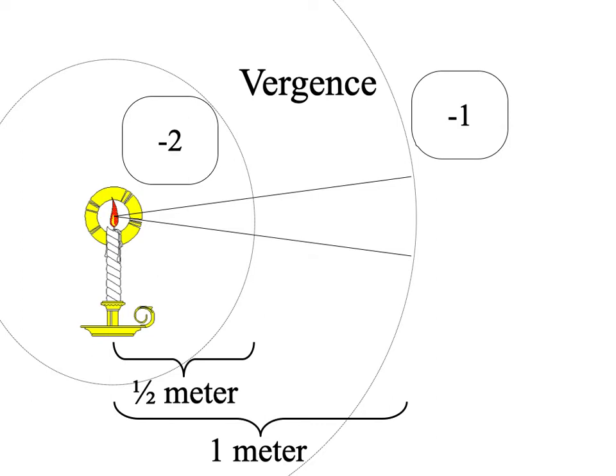If the convergence is to the left of our frame of reference, then the vergence is a negative number. If the convergence is to the right, it's a positive number. So with the same rays of light, when those rays are one half of a meter from the candle, the vergence is two to the left, so it's going to be minus two. And when the same rays of light are one meter from the candle, the vergence is going to be minus one.